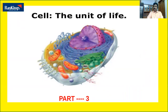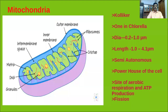The most important cell organelles under the endomembrane system are the endoplasmic reticulum, Golgi bodies, lysosomes, and vacuoles. Today I am going to talk about a few more cell organelles.